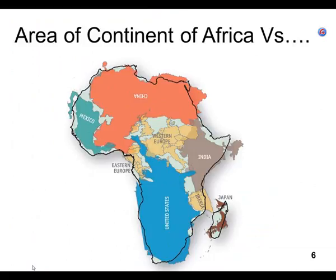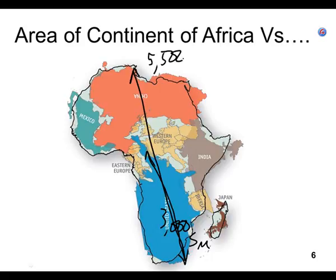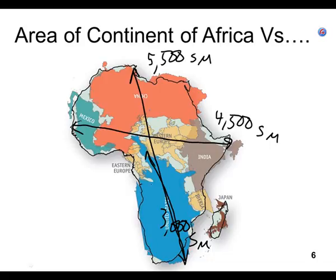I've double-checked — this is correct. If you take the 48 states of the United States and turn it sideways and shove it down there, you can see. They put Mexico in it, China upside down, Western Europe, Eastern Europe, Spain and Portugal, Japan, and India. The US is about 3,000 statute miles across, meaning Africa is about 5,500 by 4,500 statute miles — literally three or four times bigger than the 48 states. When somebody says there are 50-plus countries in Africa, it makes sense because Africa is huge.